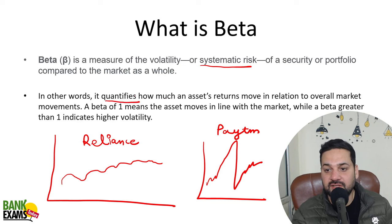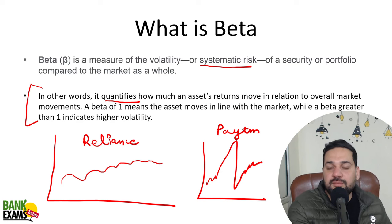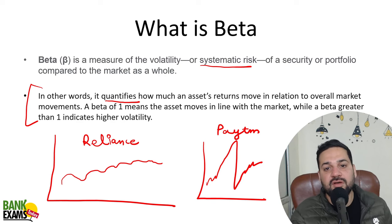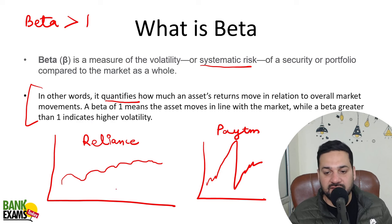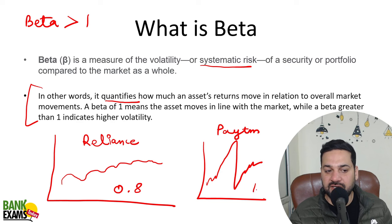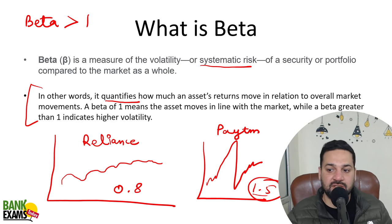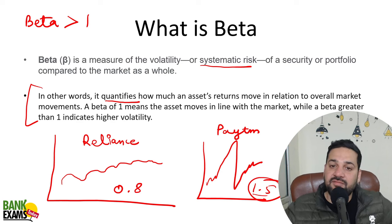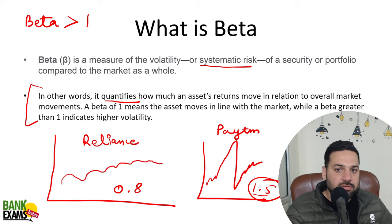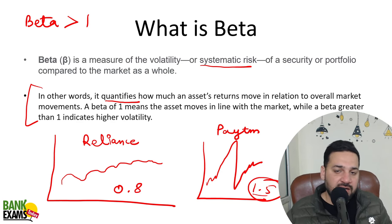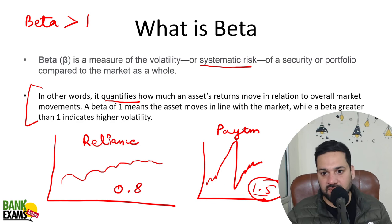In other words, beta quantifies how much an asset's return moves in relation to the overall market movements. If the beta of a security is more than one — let's say Reliance Industries has a beta of 0.8 and Paytm has a beta of 1.5 — that means if the market is going up by 100%, the Paytm stock may go up by 150%. And if the market is going down by 20%, the Paytm stock may go down by 30%. In the case of Reliance, if the market goes down by 20%, Reliance Industries stock would go down by only 16%.